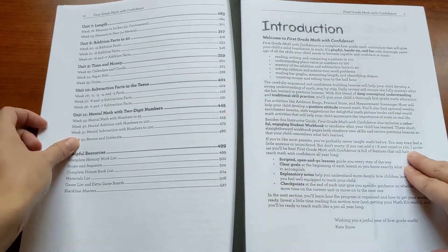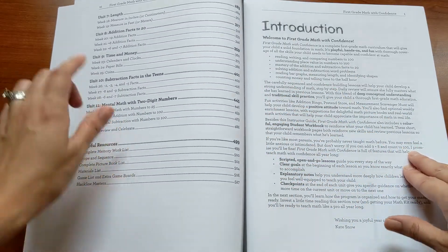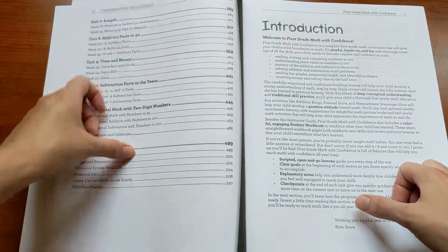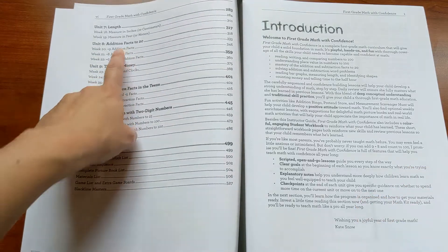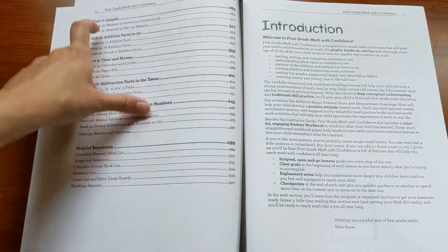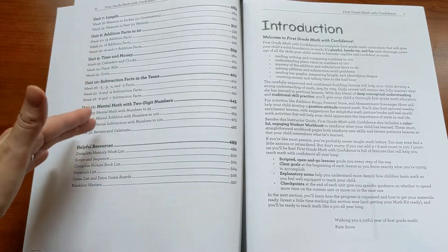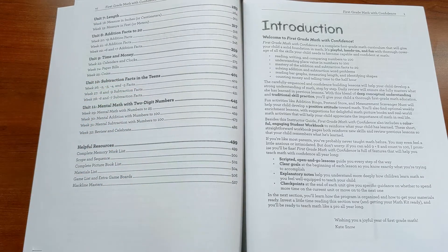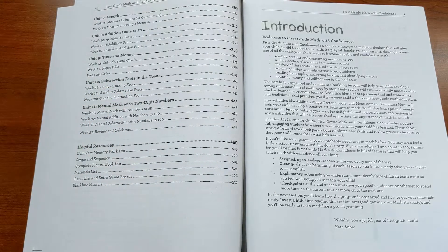And it covers all of the important first grade topics: counting to 100 and understanding place value, addition facts to 20, there's time, money, length, and then gets into subtraction facts and mental math by the end of the year with two-digit numbers.